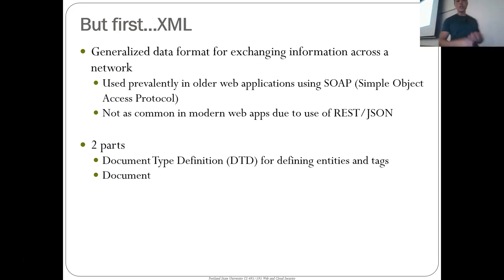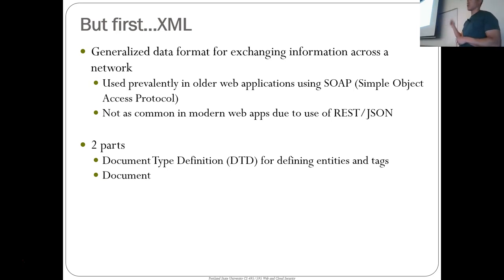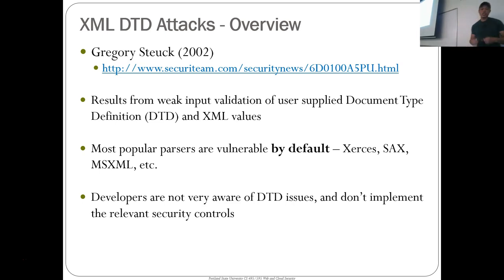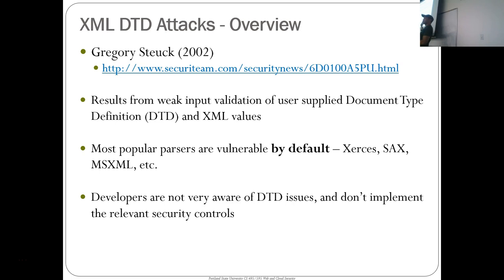The first thing I want to talk about is XML, a generalized format that preceded JSON, being used to build web applications. Before REST APIs and JSON were on the scene, we had SOAP and XML. SOAP is the Simple Object Access Protocol — you pass XML back and forth using this protocol to build your web application. XML has two parts: a document type definition that defines the structure and elements, and then the document itself that meets that specification.